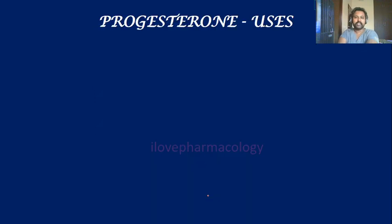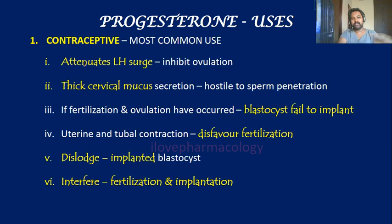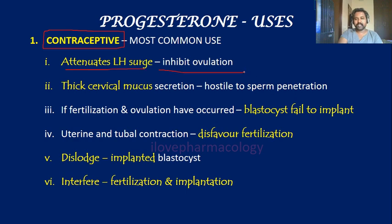Moving on to the individual uses, the most common use of progesterone is as a contraceptive agent. The mechanism by which progesterone acts as a contraceptive is it attenuates the LH surge, thereby inhibiting ovulation, and also it thickens the cervical mucus secretion, making it hostile to sperm penetration.